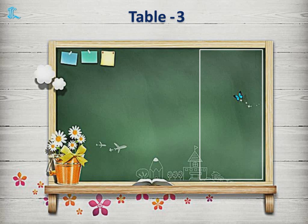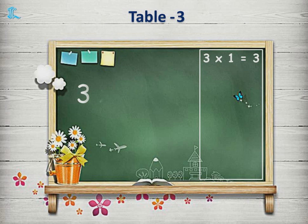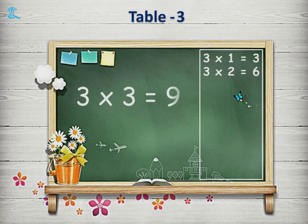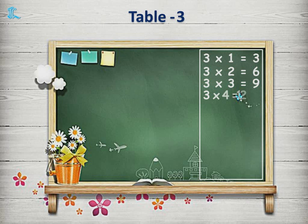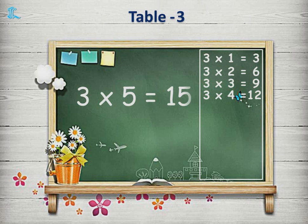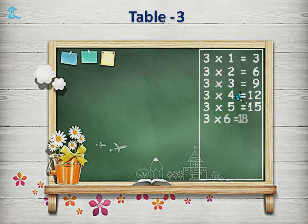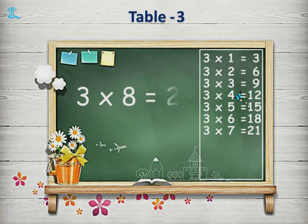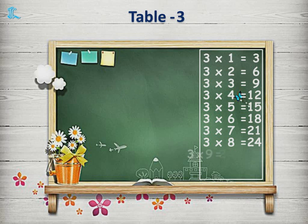Multiplication Table 3. 3 1s are 3. 3 2s are 6. 3 3s are 9. 3 4s are 12. 3 5s are 15. 3 6s are 18. 3 7s are 21. 3 8s are 24. 3 9s are 27. 3 10s are 30.